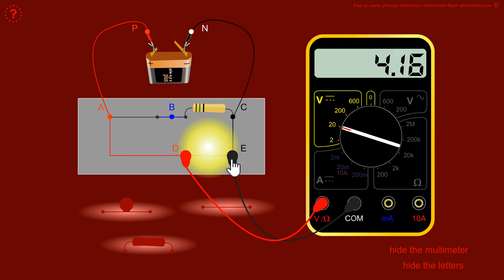And finally 4.16 volts because the law says it, the voltage measured at the terminals of dipoles connected in parallel is the same. That's it for this video. Thank you.